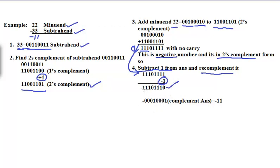Then we recomplement it — simply changing 1 to 0 and 0 to 1. So 1110 1110 becomes 0001 0001, which is a negative answer. This is equivalent to 0000 1011, meaning 11. So this is minus 11.